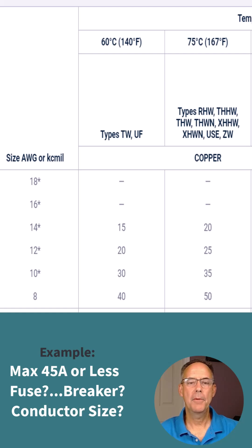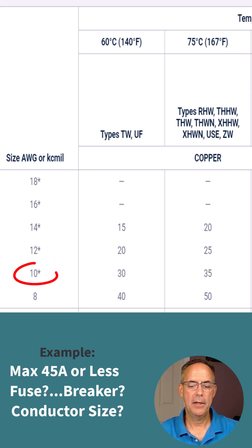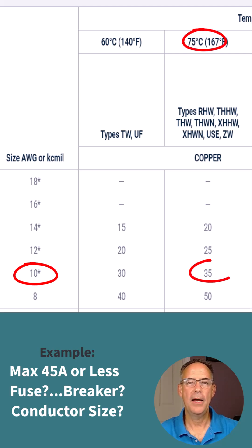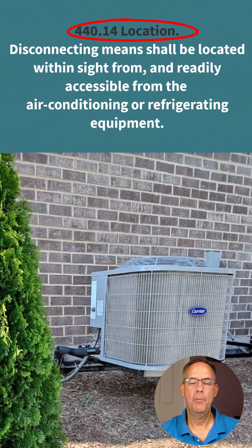Based on Table 310.16, a number 12 conductor would only be able to handle 25 amps, so we would have to go with a number 10. A number 10 in the 75°C column would be 35 amps, so that would be plenty for this installation.